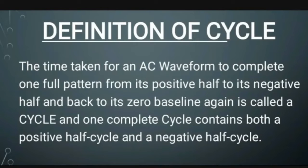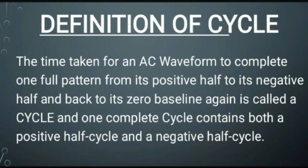So first of all, we will see what exactly the AC waveform is all about. We have a straight line indicating the DC and we have a waveform — positive half cycle and negative half cycle — of alternating quantity.